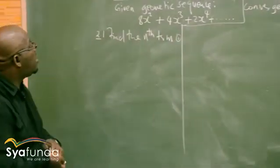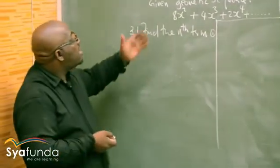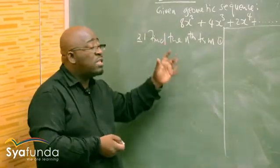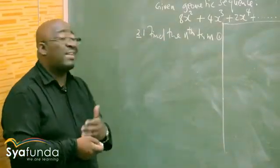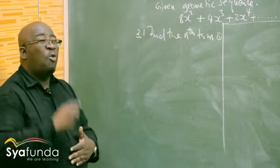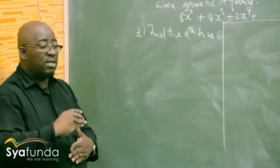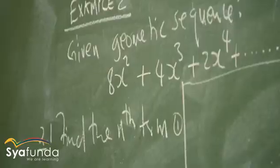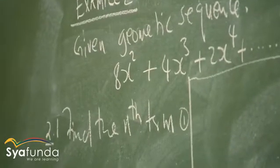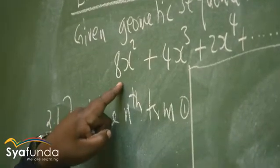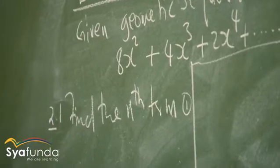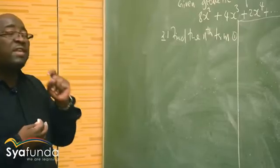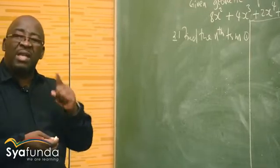Let's come back to the question. We are given a geometric sequence. Once we are told that it is a geometric sequence, we must know there is a common ratio, where t2 over t1 is the same as t3 over t2. Given the geometric sequence, the first term is 8x squared, then 4x cubed, then 2x to the power 4. Find the nth term.